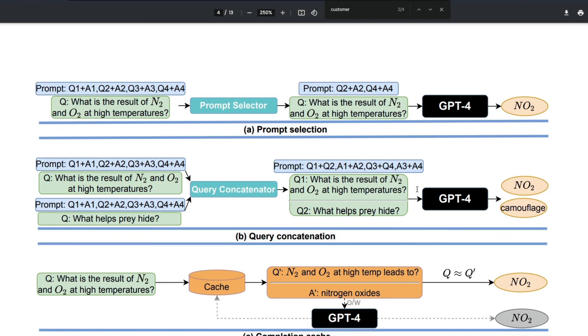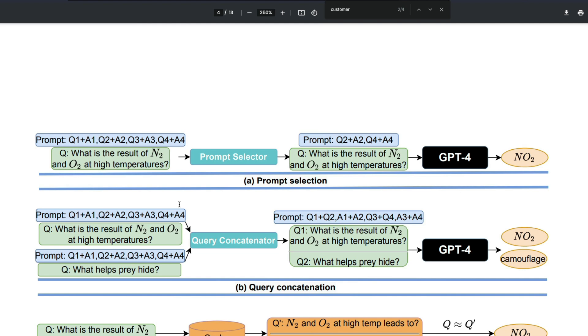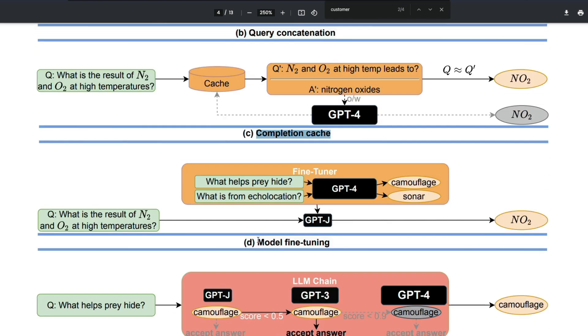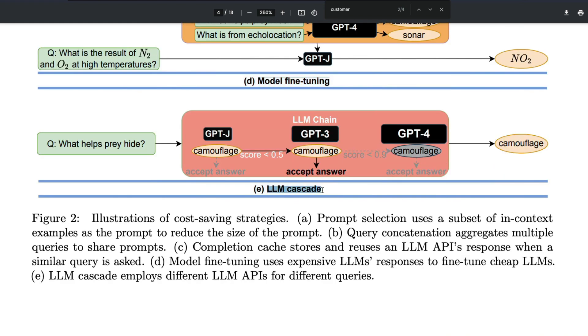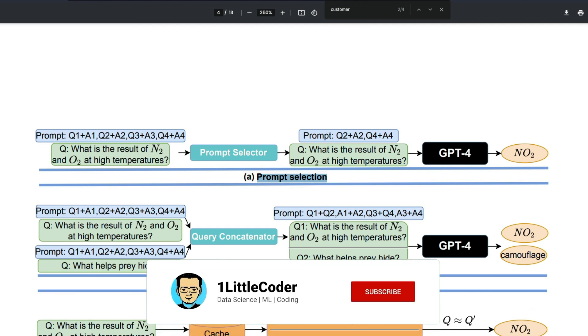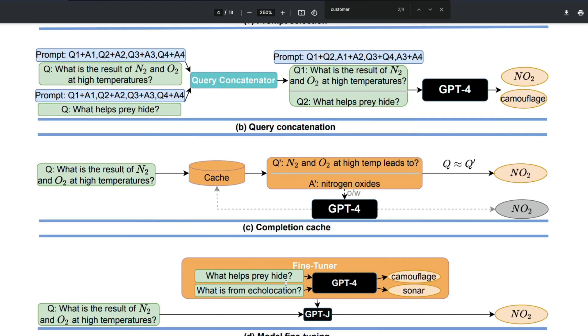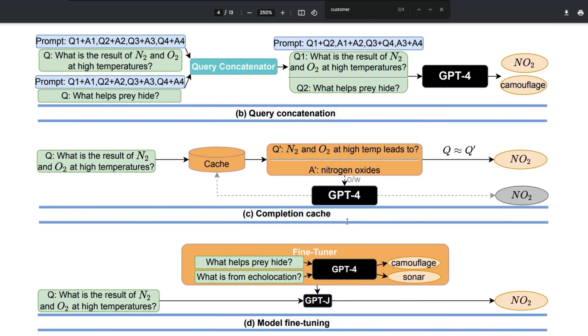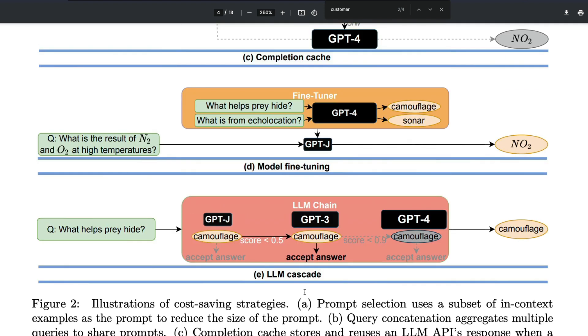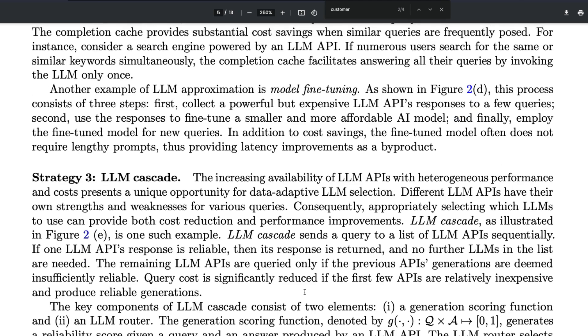Without boring you further, I'm going to take you directly into the architecture of FrugalGPT. The first one is called prompt selection, the second one is query concatenation, the third one is completion cache, the fourth one is model fine-tuning, and the fifth one is called LLM cascade. Under prompt adaptation you have prompt selection and query concatenation. Under LLM approximation you have completion cache and model fine-tuning. And finally, you have an LLM cascade.